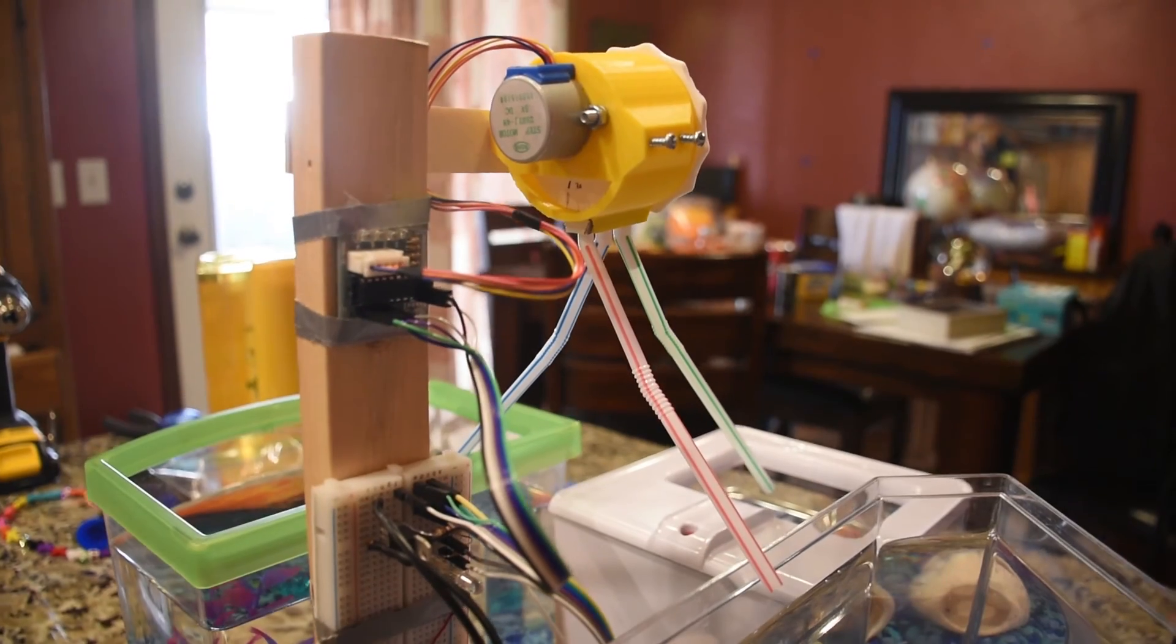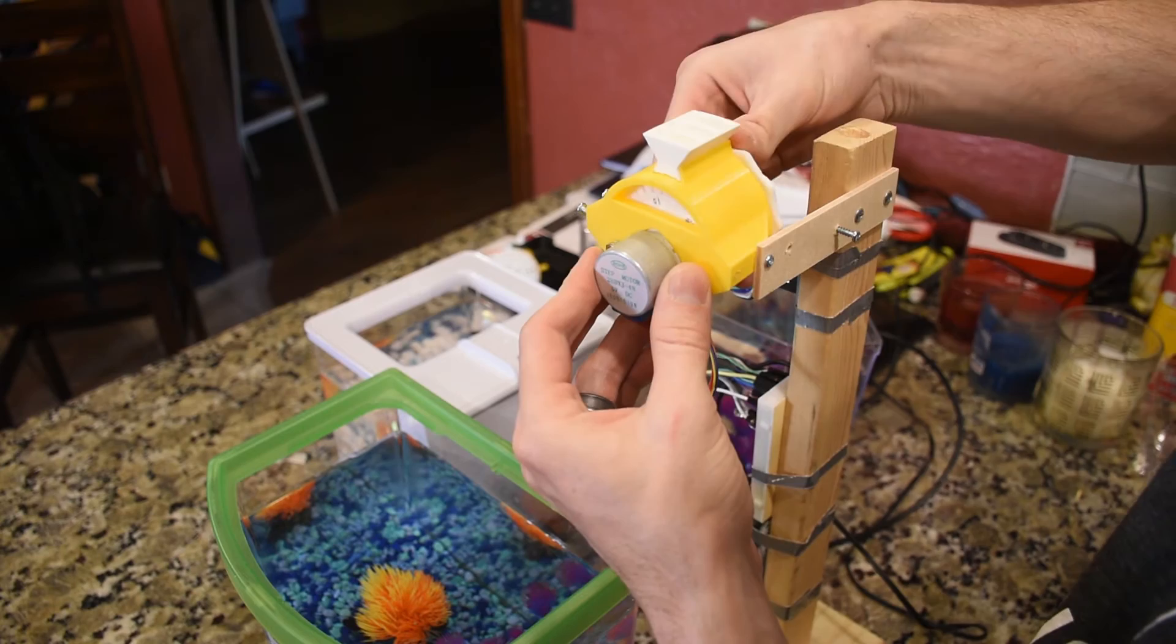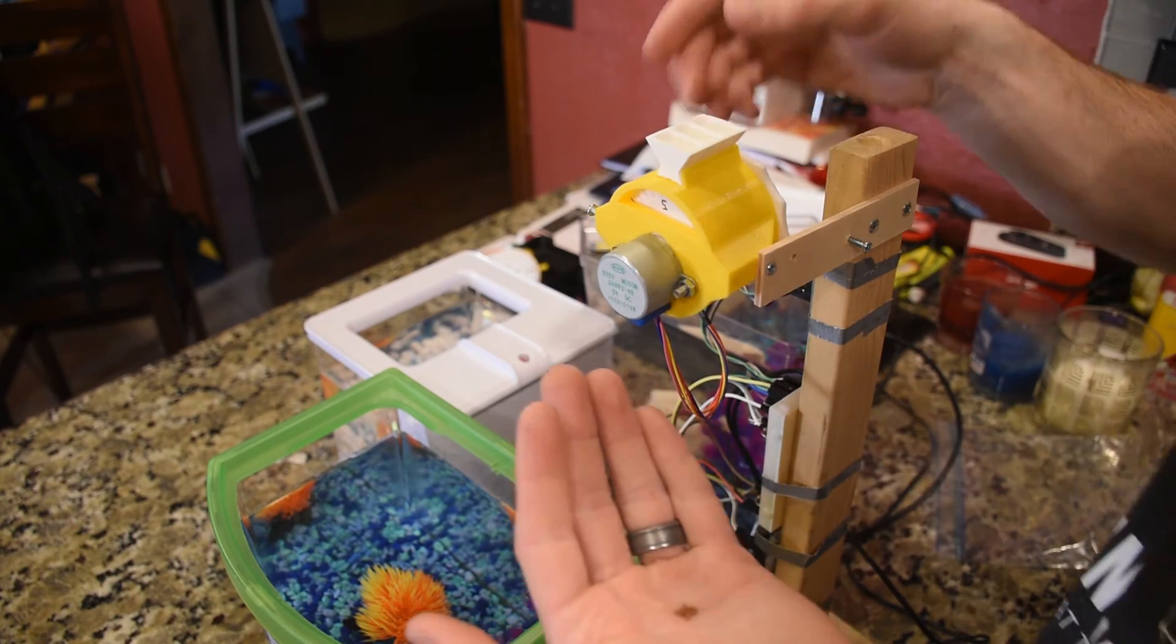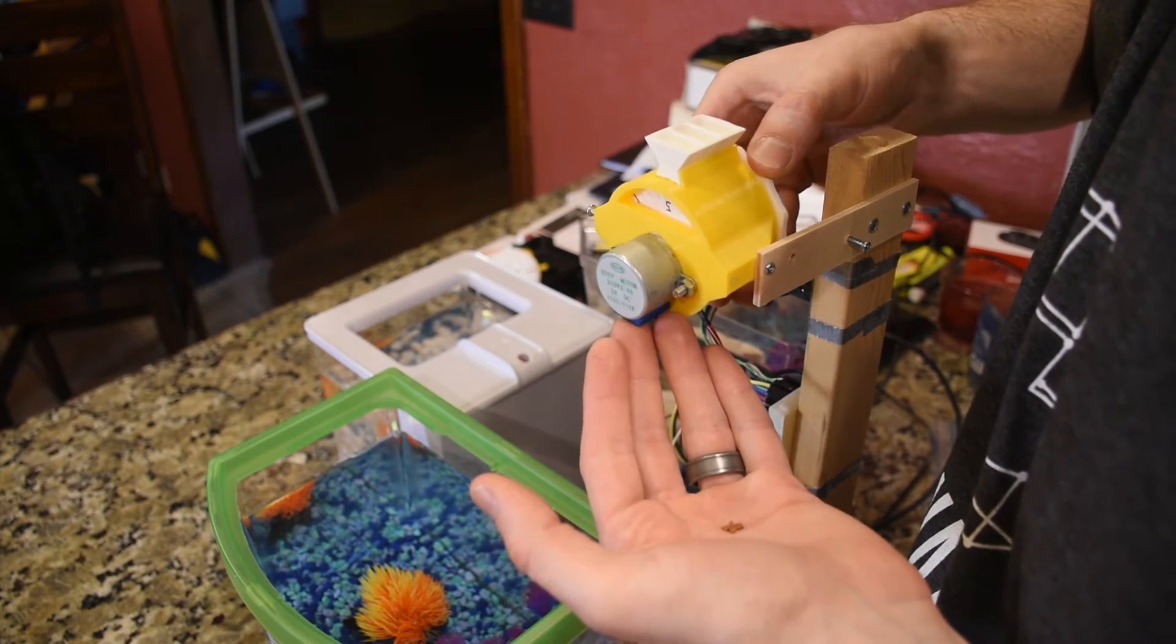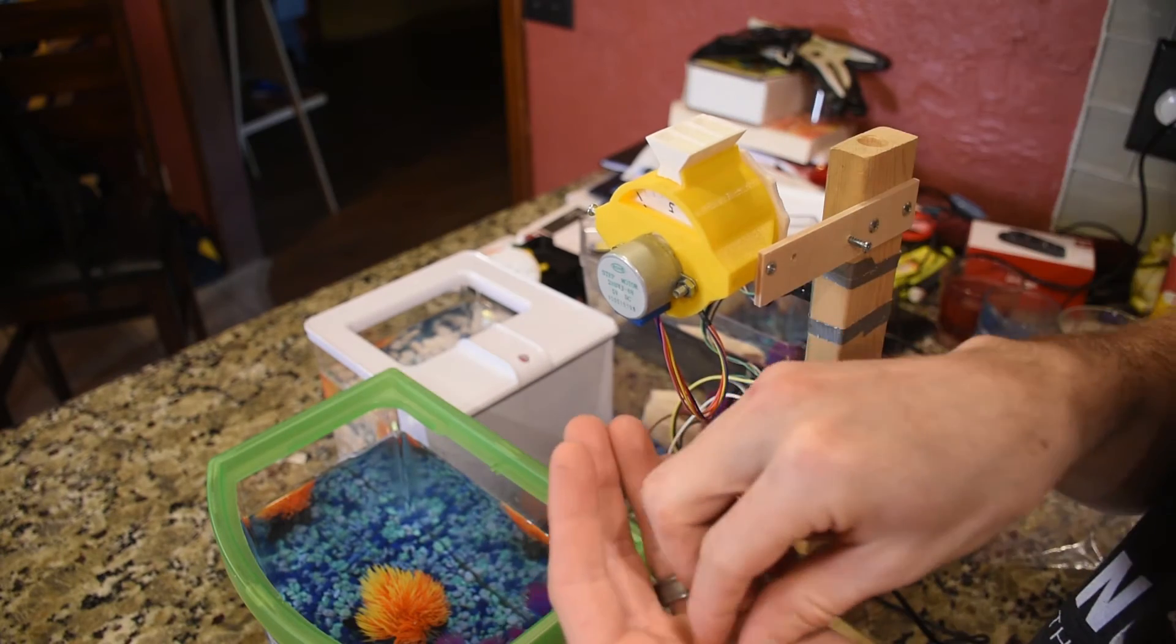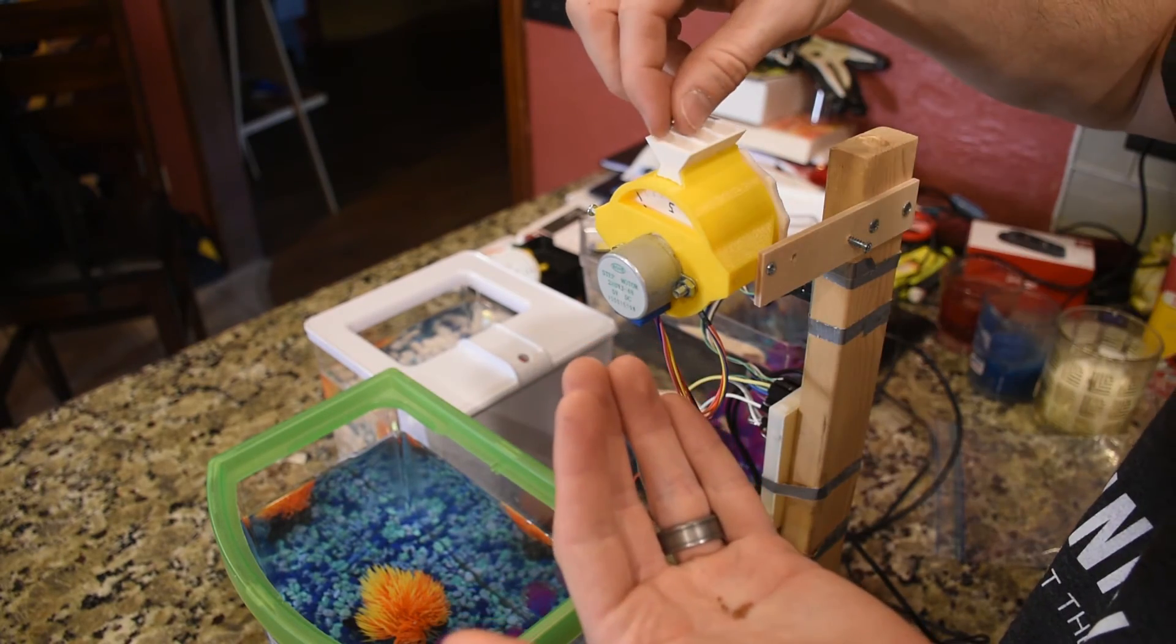This feeder is also driven by a single stepper, 12 degrees at a time. To load this one, I wind it back two segments for every day that I need. Then I snap in the loading funnel and drop the pellets in. Then I wind it forward and fill each spot until I'm back to the start position.